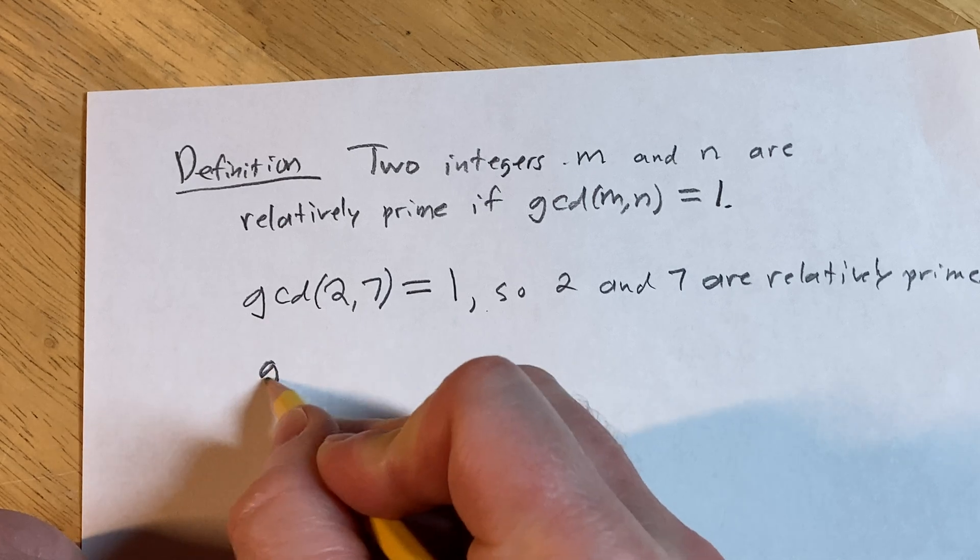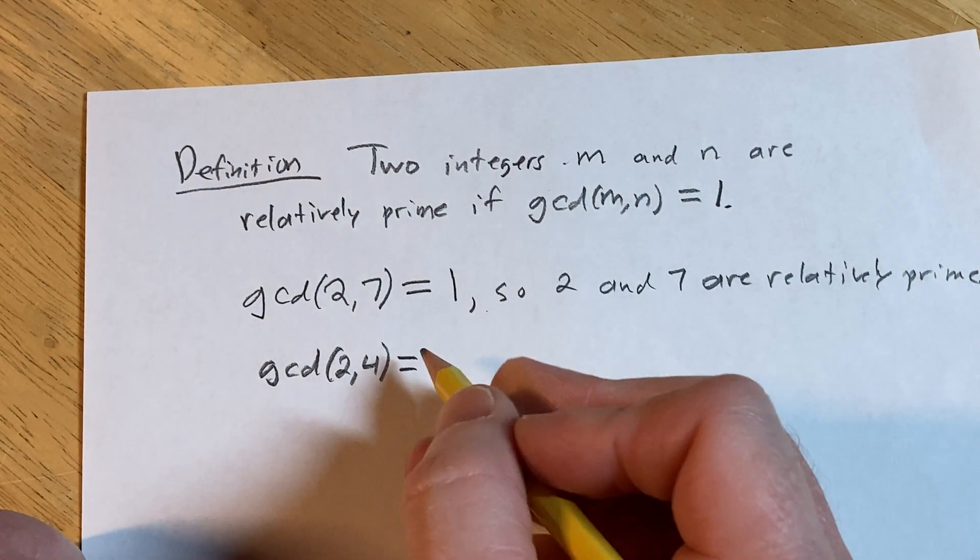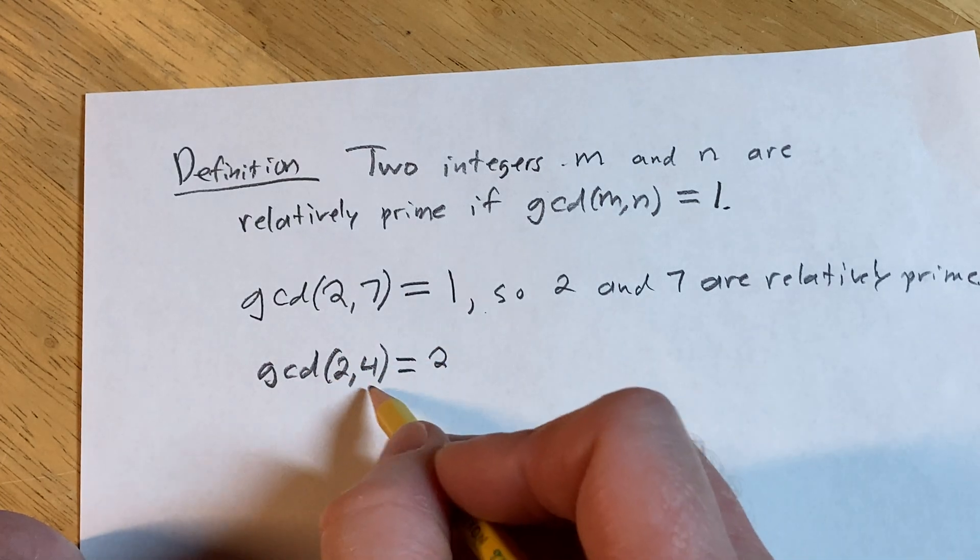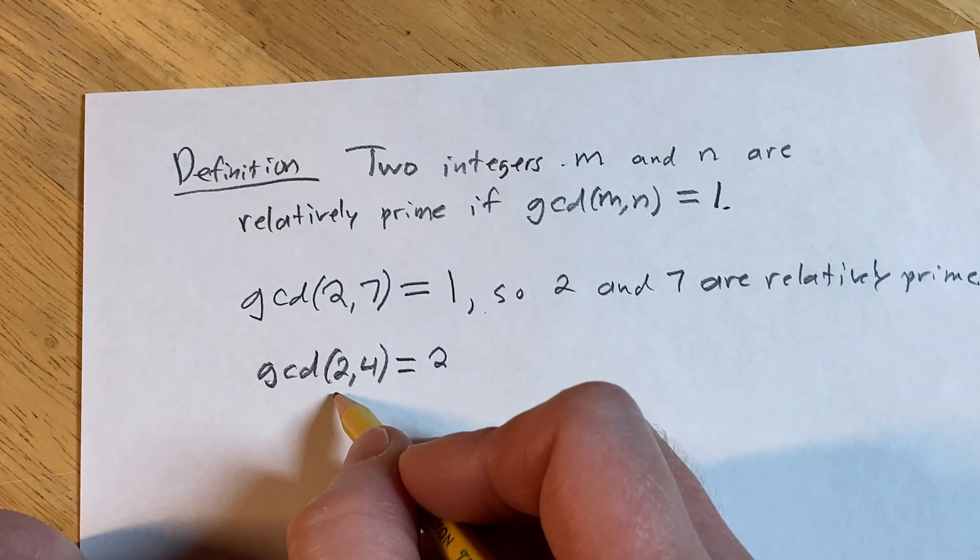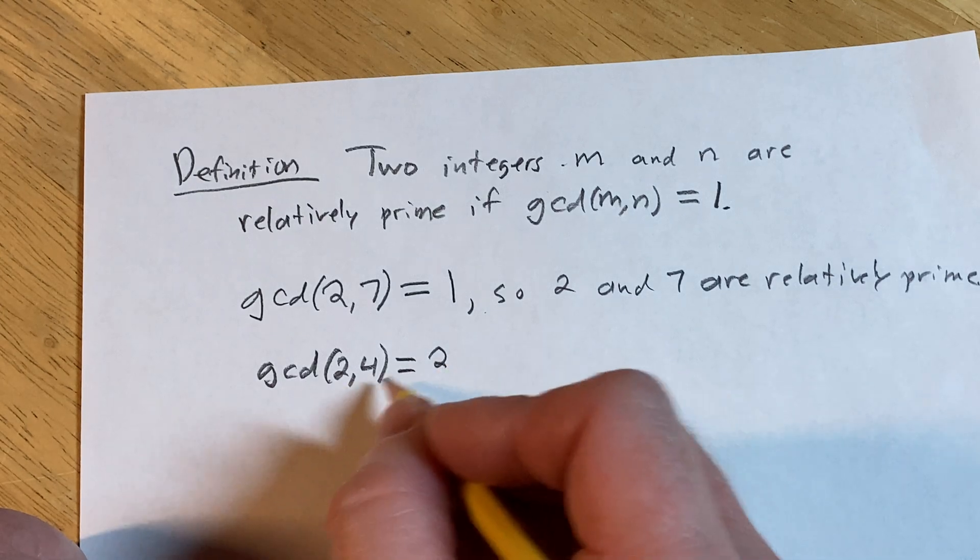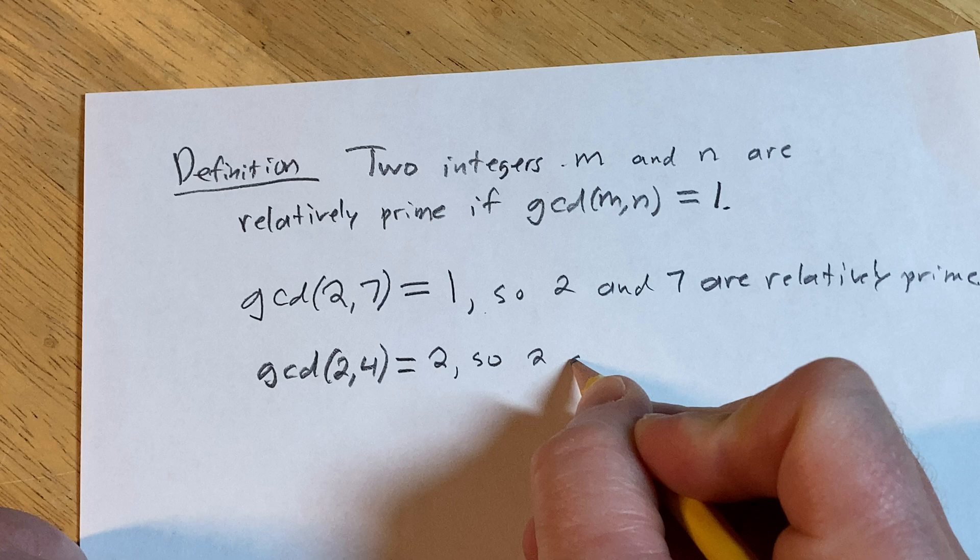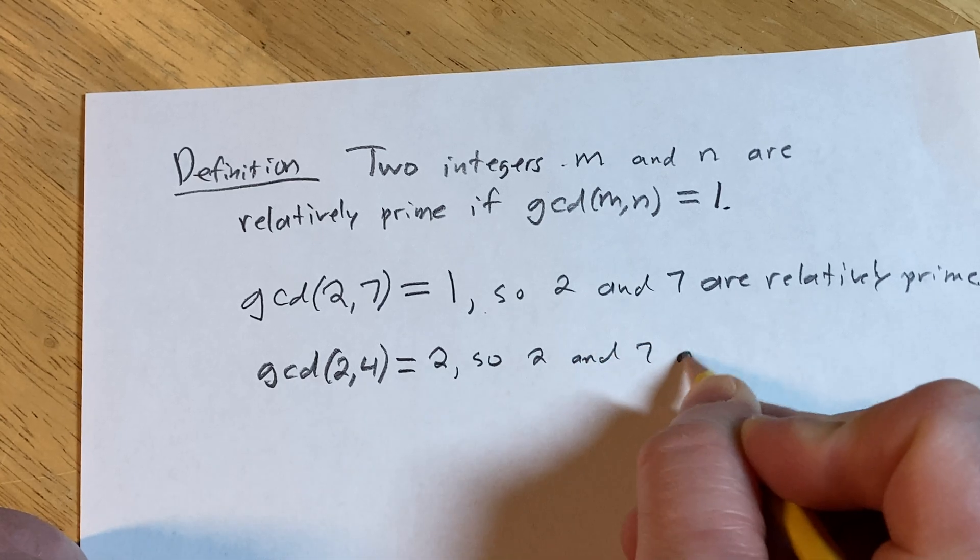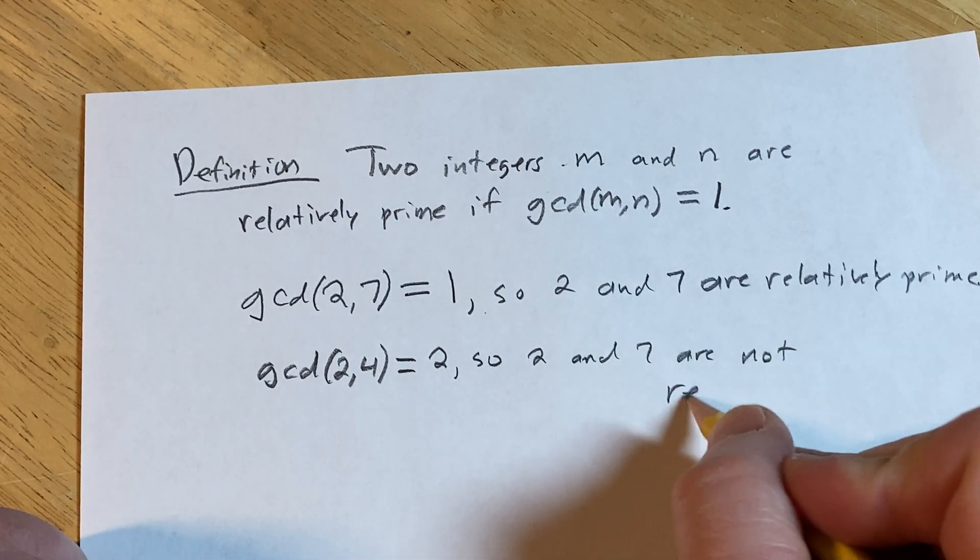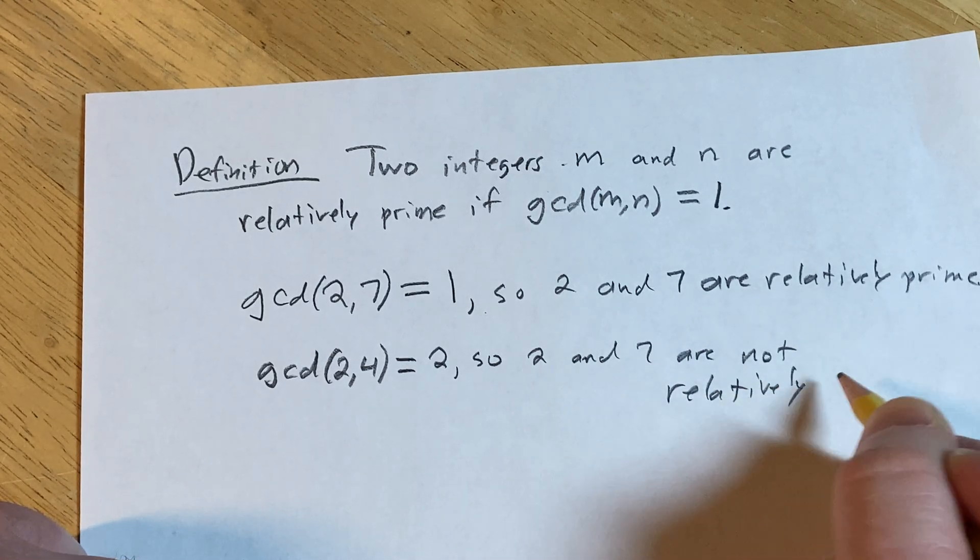On the other hand, if we find the GCD of 2 and 4, the greatest common divisor of 2 and 4 is 2, because it's a common divisor of 2 and 4, and it's the biggest one. The other common divisor of 2 and 4 is 1, and 2 is bigger than that number. So, 2 and 4 are not relatively prime.